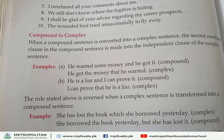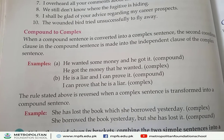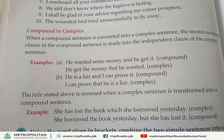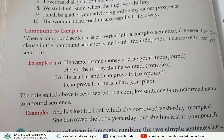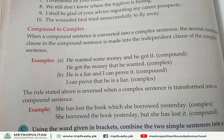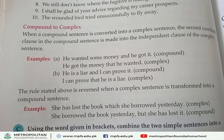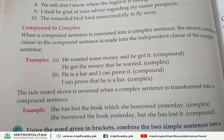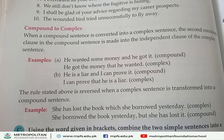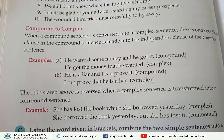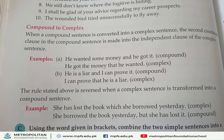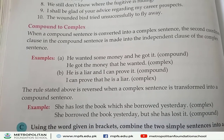The rule stated above is reversed when a complex sentence is transformed into a compound sentence. For example: 'She has lost the book which she borrowed yesterday' — this is complex. Transformed into compound: 'She borrowed the book yesterday but she has lost it.'